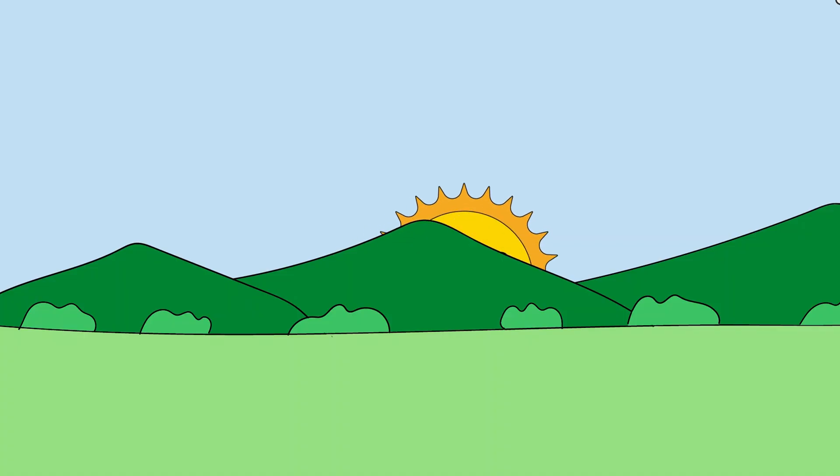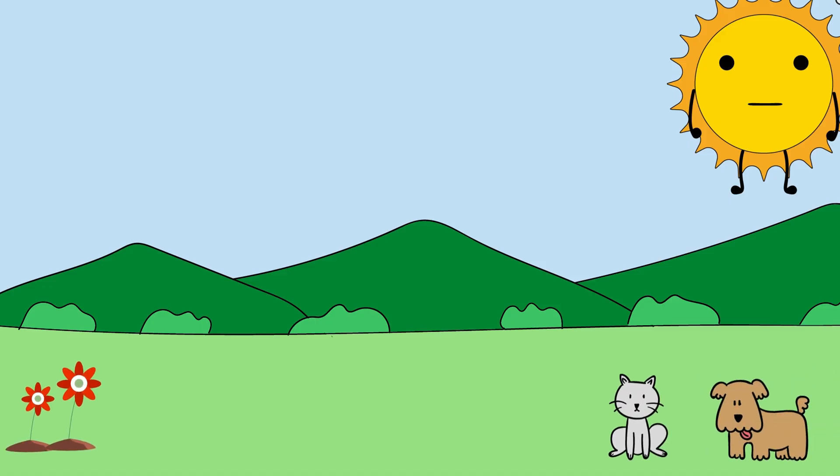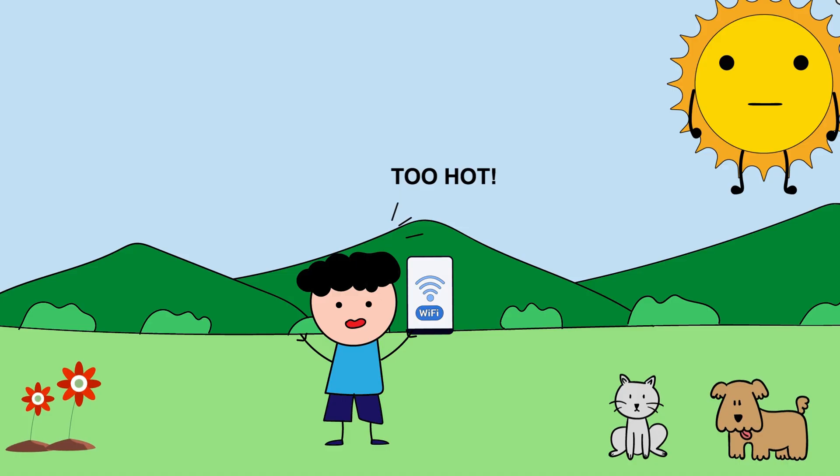It's literally powering every living thing on Earth. Plants, animals, Wi-Fi routers. And yet we blame it for heat waves and sunburns. Being the sun means being the most underappreciated overachiever in existence.